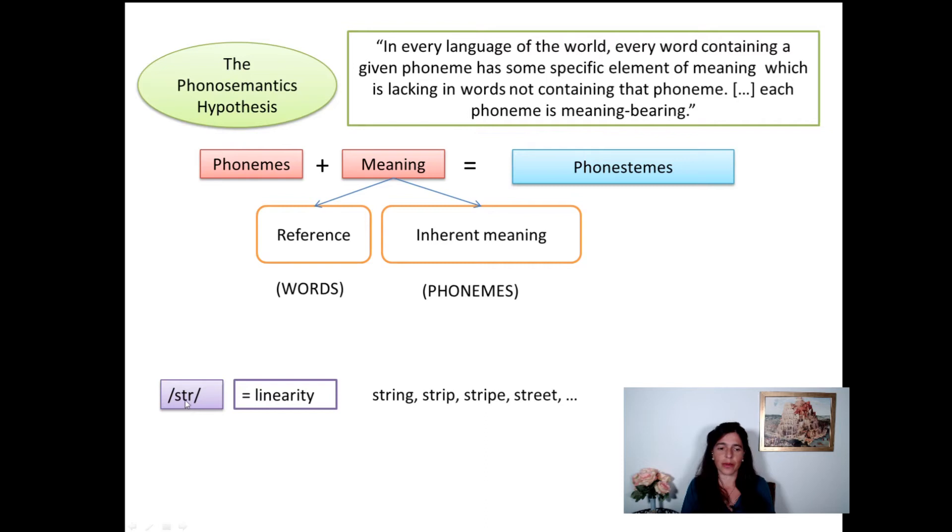I'll give you a quick example. You have words with STR in English, right? And they all mean something linear, like a line, a string, a strip, a stripe, a street. That's curious, right? Because when you look at each of these words, they all have different roots according to the standard etymology explanation.